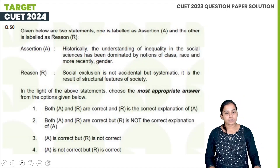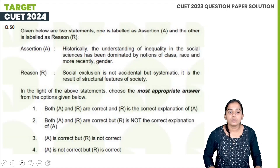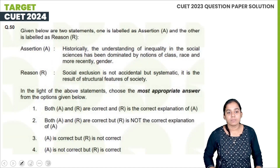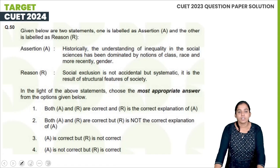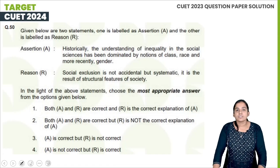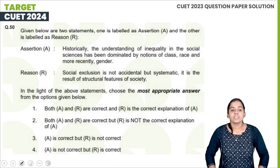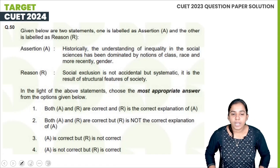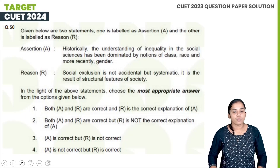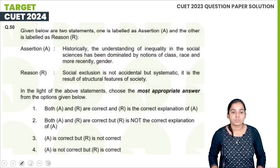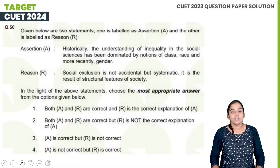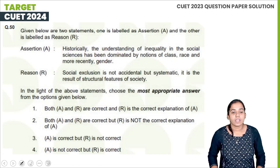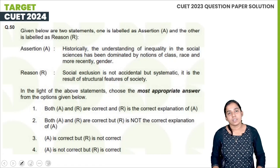The next question gives two statements — one labeled as assertion and the other as reason. First statement: Historically, the understanding of inequality in the social sciences has been dominated by notions of class, race, and more recently gender.